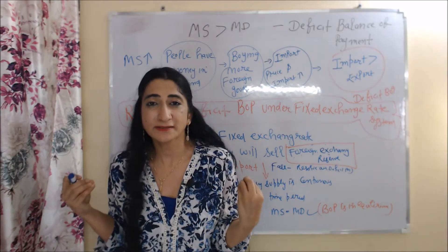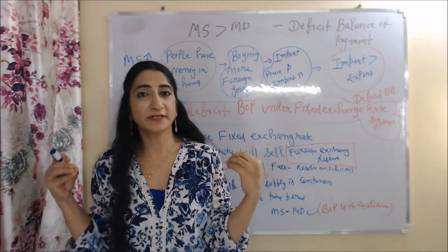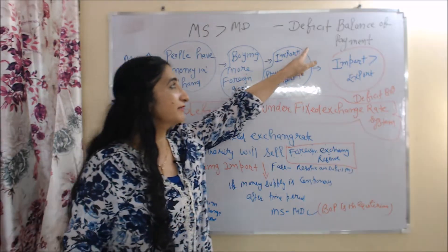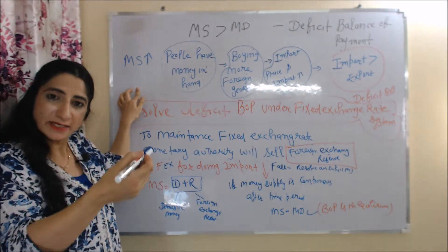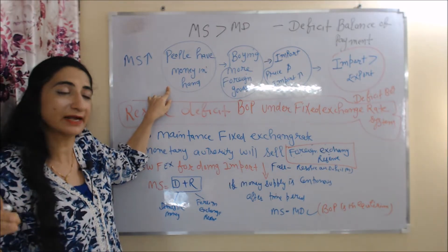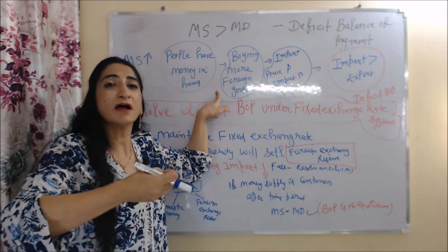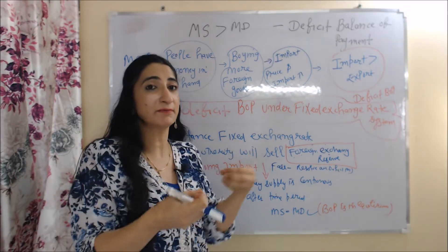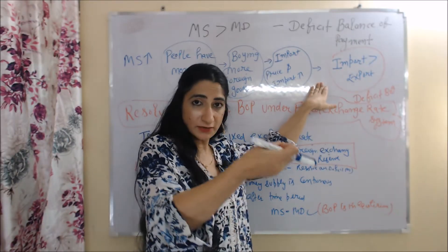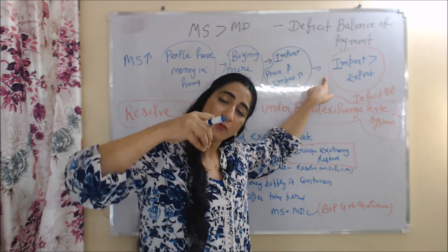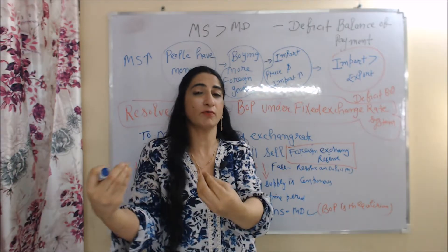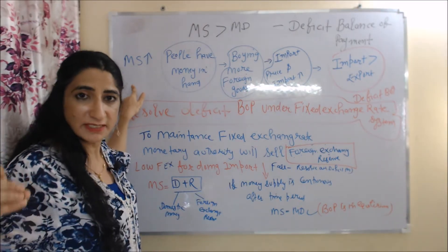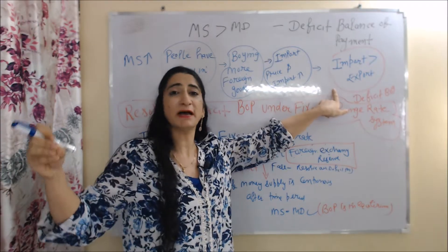According to this approach, excess money supply over money demand can cause a deficit balance of payment. When money supply is more than money demand, we have a deficit balance of payment, because when money supply increases, people have more money in hand and start buying more and more foreign goods. If people are buying more foreign goods, imports are increasing. If imports continue increasing, imports will exceed exports, and as we all know, when imports exceed exports, we have a deficit balance of payment.